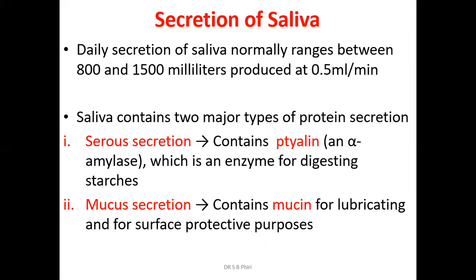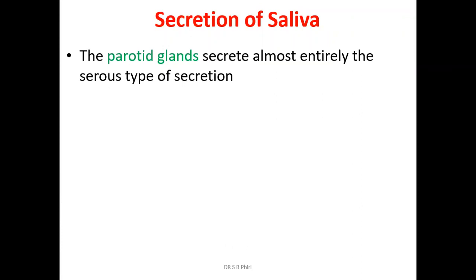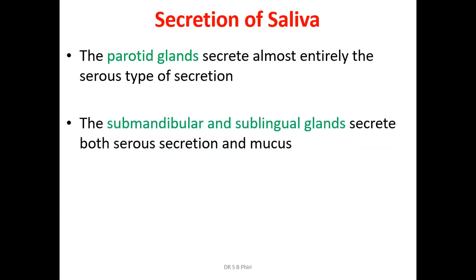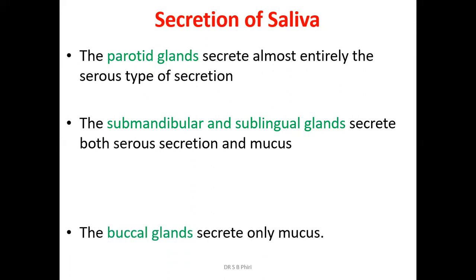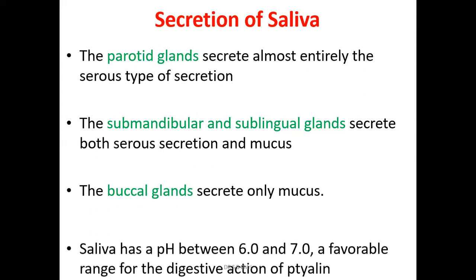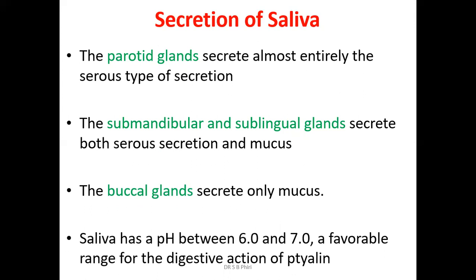The parotid gland secretes almost entirely the serous type. The submandibular and sublingual secrete both serous and mucus secretions, though some textbooks describe the sublingual as more mucous. The buccal glands are entirely mucous. Saliva has a pH of 6.0 to 7.0, which is a favorable range for the digestive action of ptyalin. Buffer systems in saliva help maintain this pH within the oral cavity.